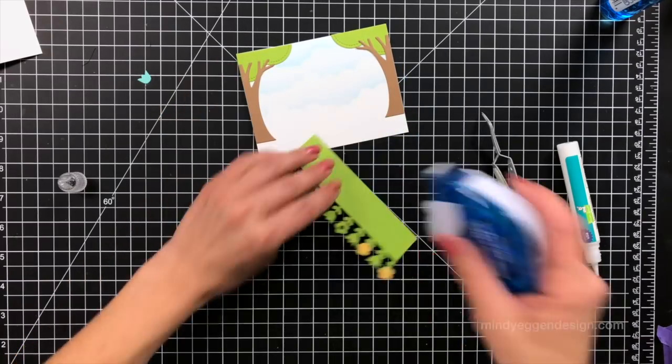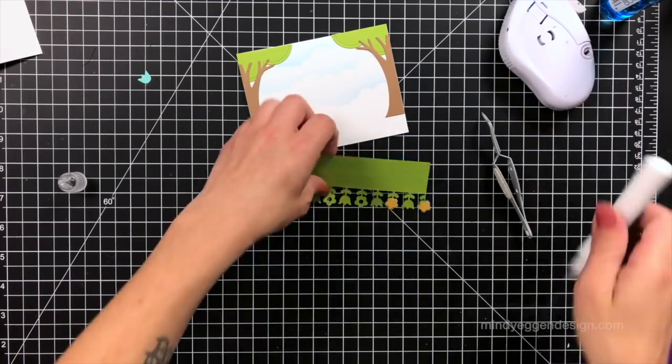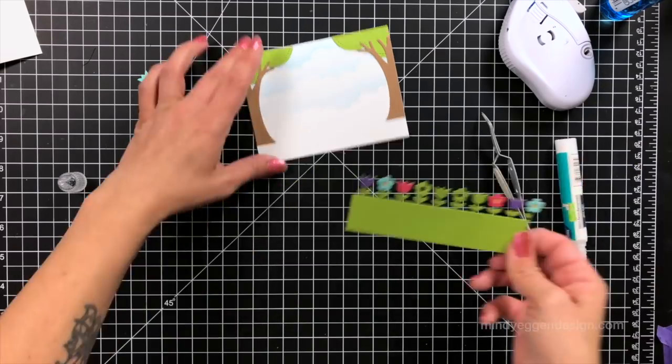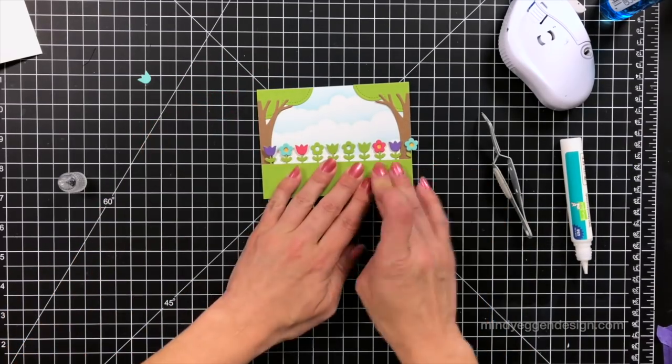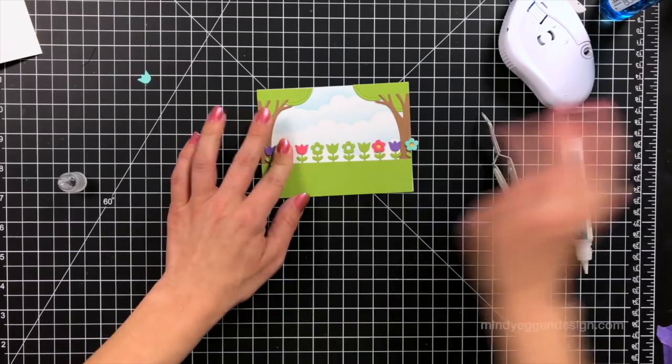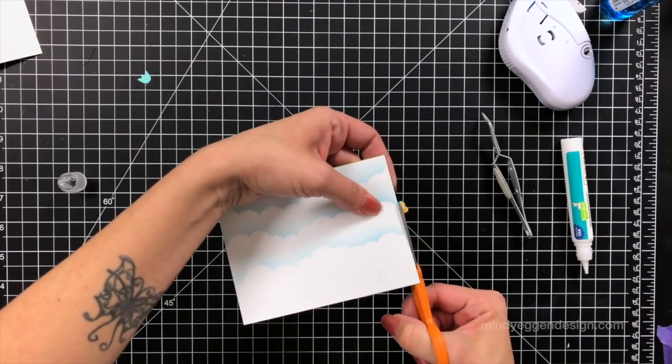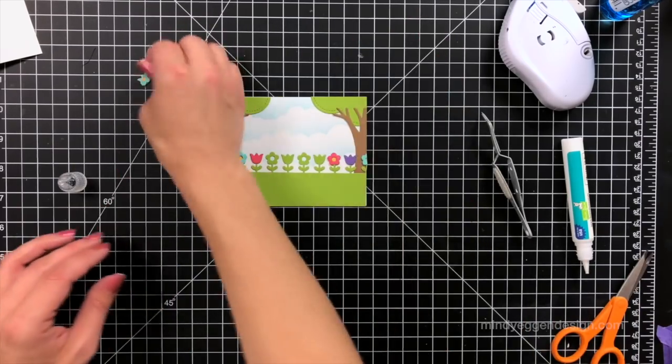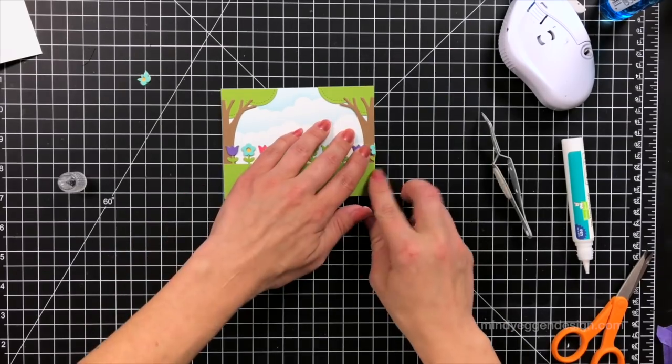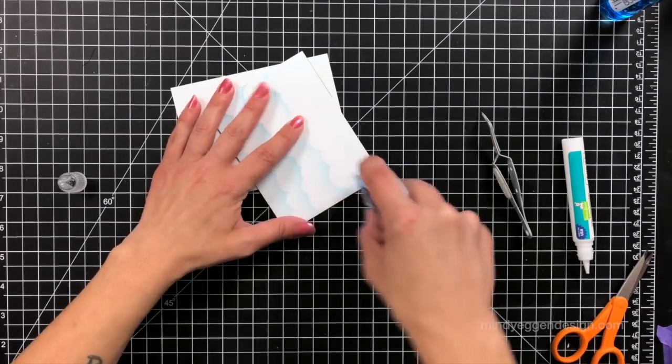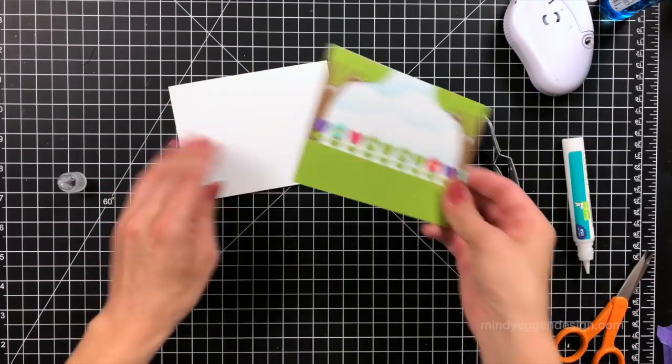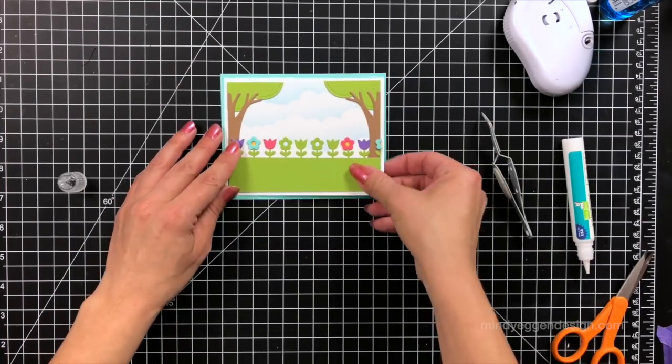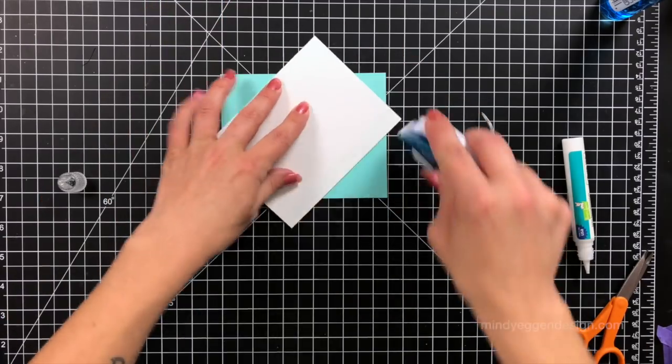Off screen I did go ahead and trim off some of that grass a little bit so it wasn't too high up. Then I can go ahead and attach this to the front of my card. I just used a tape runner for the bottom and then some liquid glue for the flowers. I will end up trimming off the edge there so it's all flush. Then I attach this piece to some white cardstock measuring 4 by 5 1/4. That just gives it a nice white border. The white cardstock does get attached to some mermaid cardstock. There is a lot of layering here but I think it really worked out well.